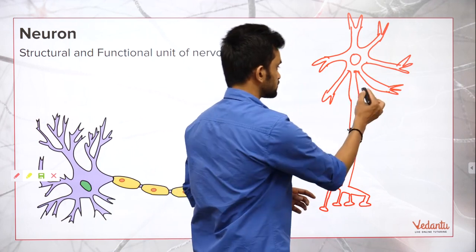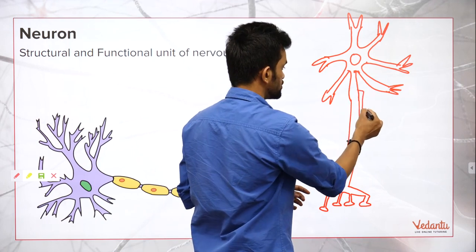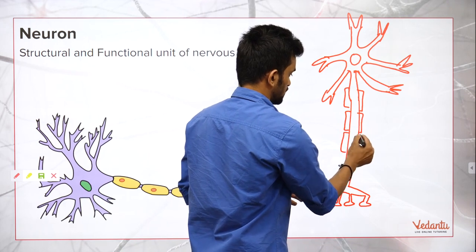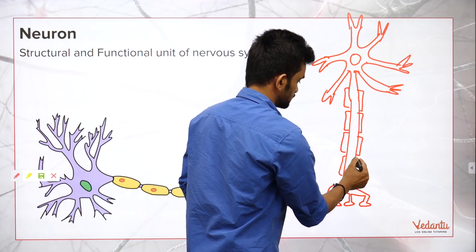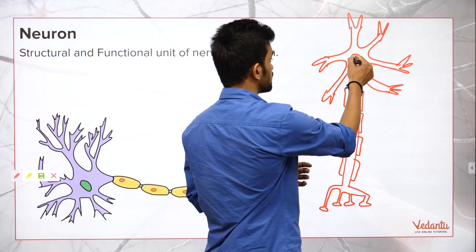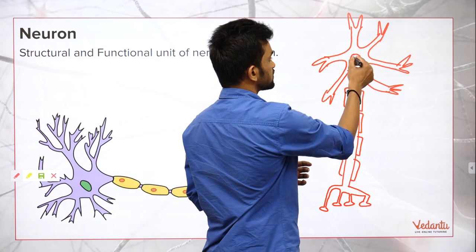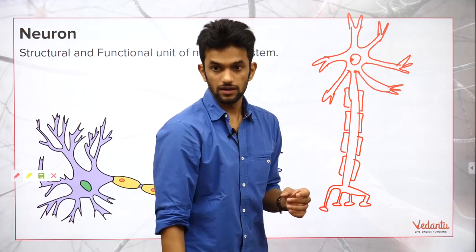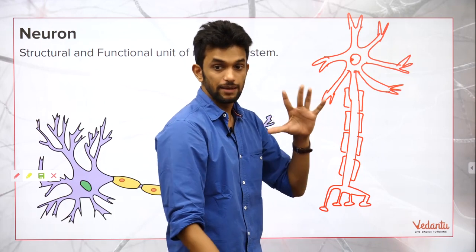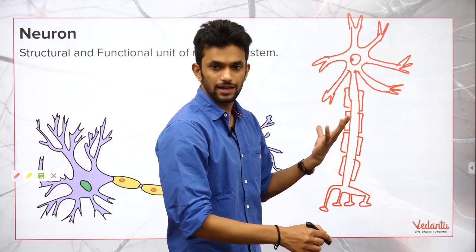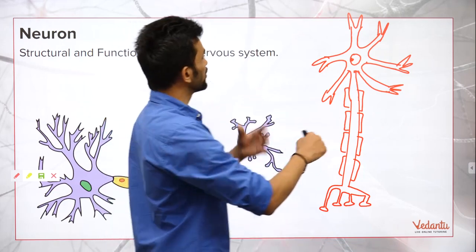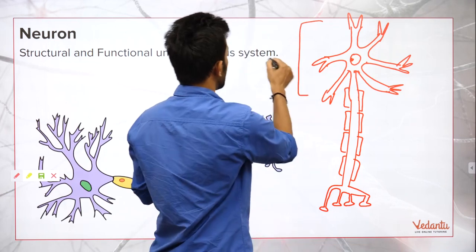Like this, we can draw the neuron and add the myelin sheath. We draw a nucleus over here. Labeling becomes very important. This top portion is called the cytone or the cell body.